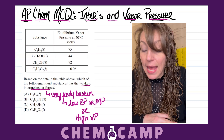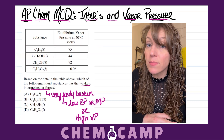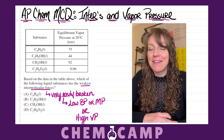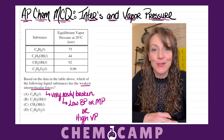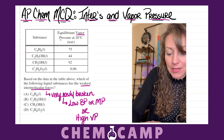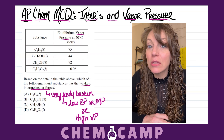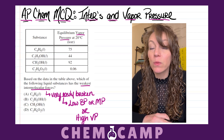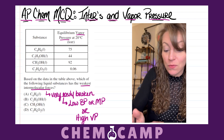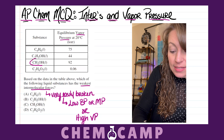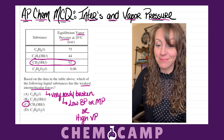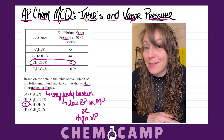Looking at our data table, we have four different substances — all organic molecules, meaning they have carbon atoms bonded to either hydrogens or oxygens — and we're given their vapor pressures. Since we just established that weak intermolecular forces correspond to a high vapor pressure, we're going to look for the molecule with the highest vapor pressure. That would be CH3OH, which is answer choice C.